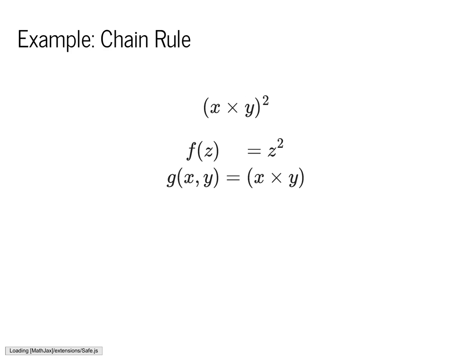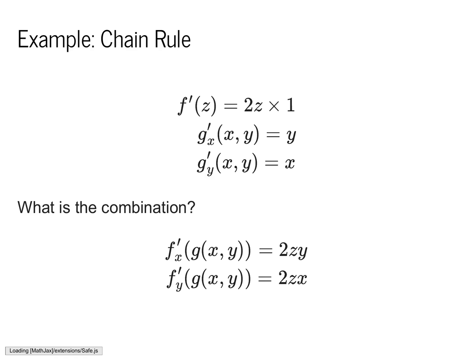Here's an example for computing the chain rule with a two-argument function. g of x, y equals x times y, and f of z equals z squared. We can write the derivatives: f' of z equals 2z, g prime of x equals y, and g prime of y equals x. Computing their combined values gives symbolic forms of 2z times y and 2z times x. The main point is that the 2z term is shared, so the first box doesn't need to know anything about the second box — it simply takes in the d value.